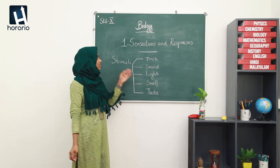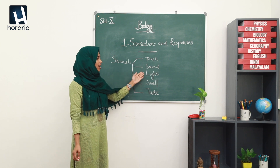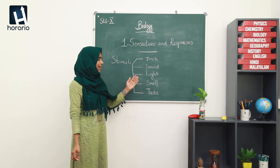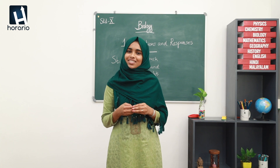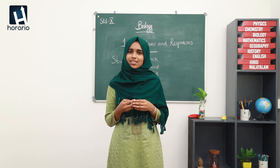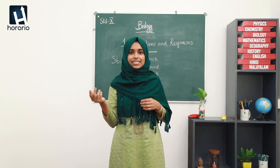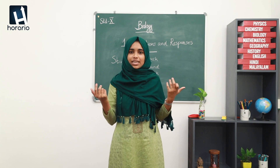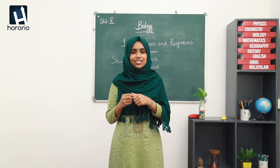So the stimuli are touch, sound, light, smell, and taste. Do we get stimulus only from our surroundings? I will give an example for you. Hunger and thirst are stimuli from our body — they are from inside our body. And sound, light, touch, and smell are from our surroundings, outside from our body. So we can classify the stimulus into two: internal stimulus and external stimulus.